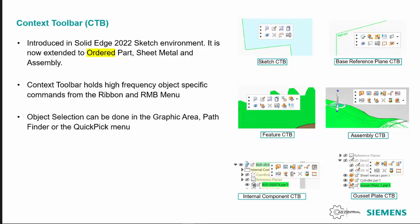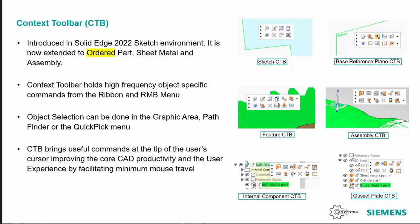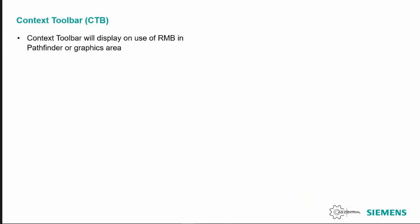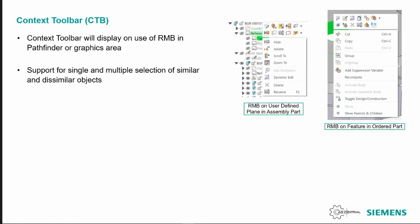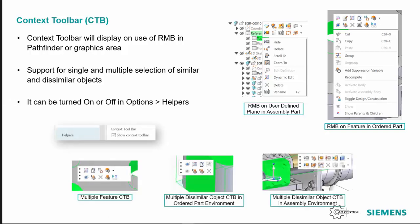Object selection can be done in the graphics area, pathfinder, or quick fit. It brings the most commonly used commands for whatever feature you're selecting into a more defined option. Support for single and multiple selections of similar and dissimilar objects is available, and it can be turned on or off within the options under helpers — the option is called 'show context toolbar'.